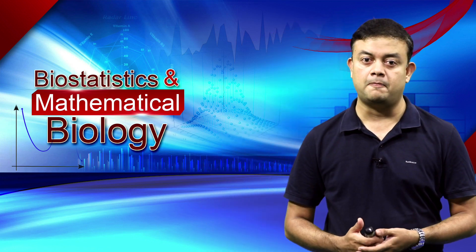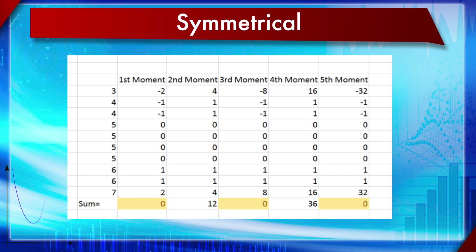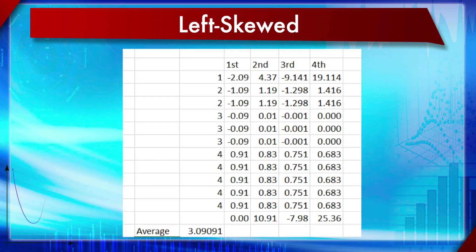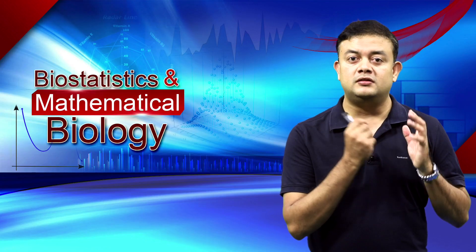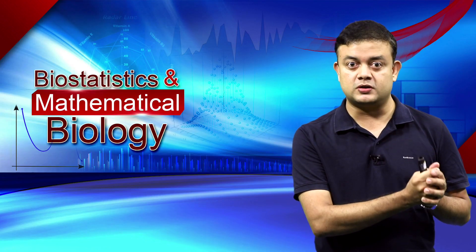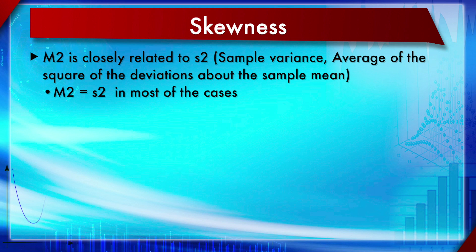In this example of a symmetric distribution, you can see that all odd-numbered moments — the first, third, fifth, and seventh — sum to zero. Had it been a left- or right-skewed distribution, only the first moment would sum to zero while the third and fifth would not. This characteristic is especially used with m3 to calculate the important test statistic called skewness.